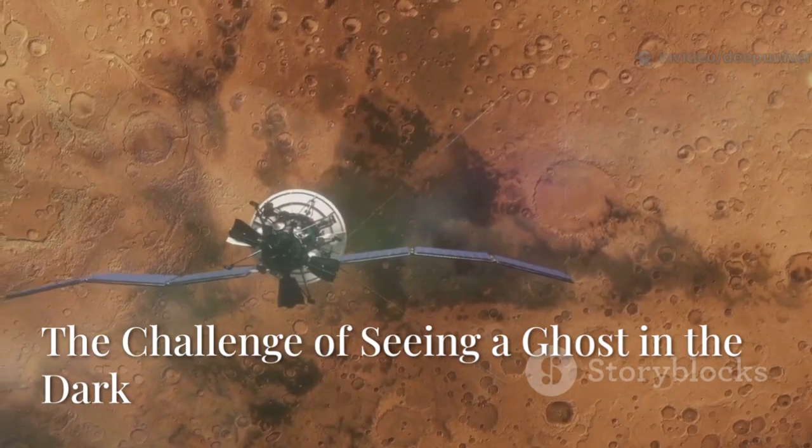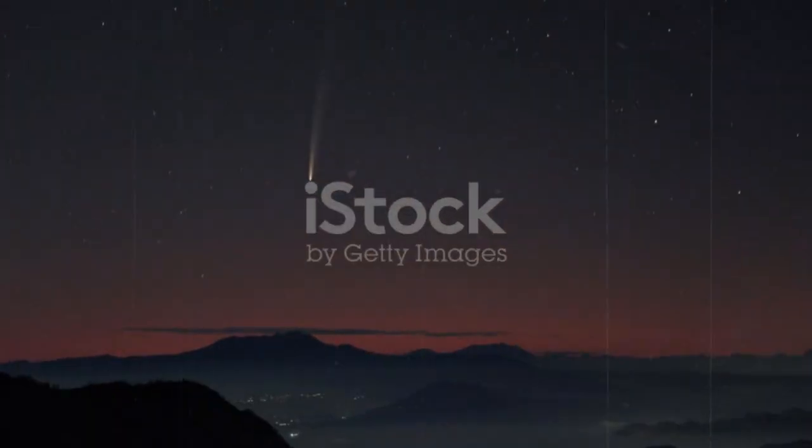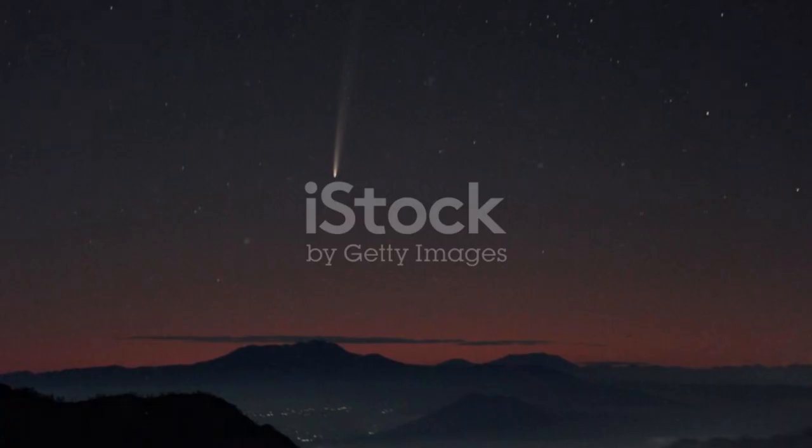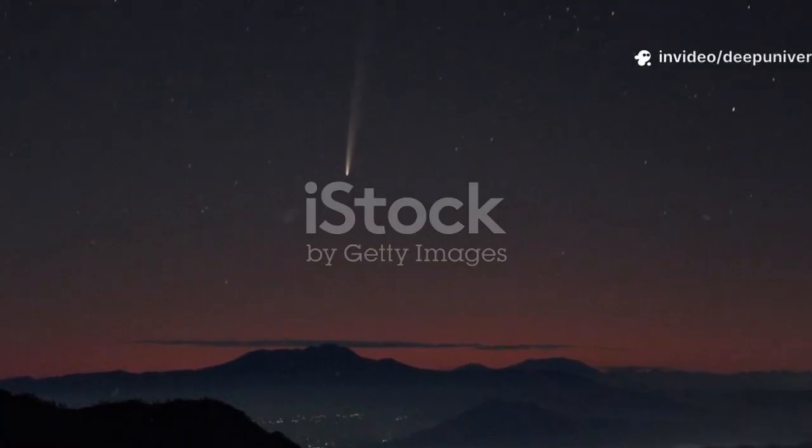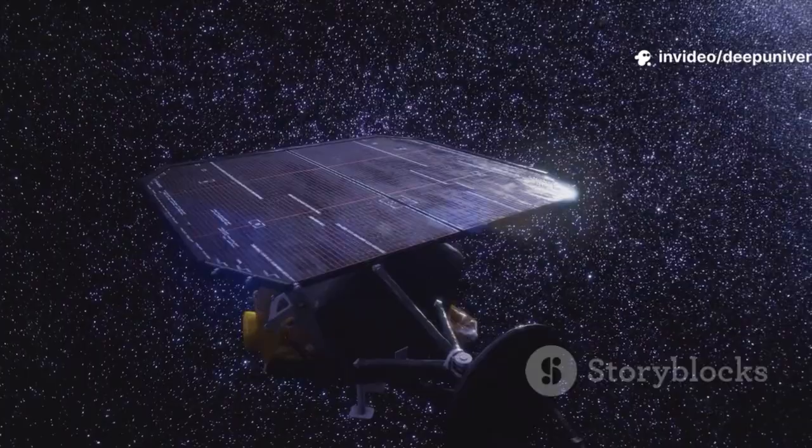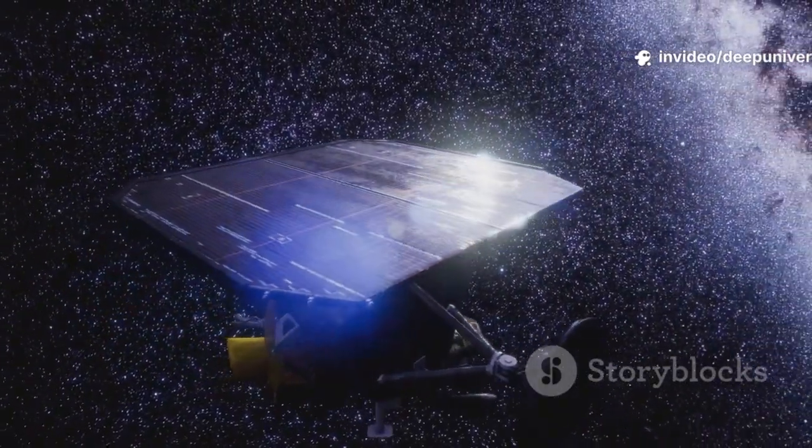Capturing images of 3i Atlas was a technical feat. The ExoMars TGO's CASSIS camera, designed for Mars' bright surface, had to spot a comet up to 100,000 times fainter. It was like photographing a firefly from miles away. Long exposures were needed, but both the spacecraft and comet were moving. Any miscalculation could blur the image. The comet's nucleus is only about a kilometer wide and millions of kilometers away, invisible even to powerful cameras.